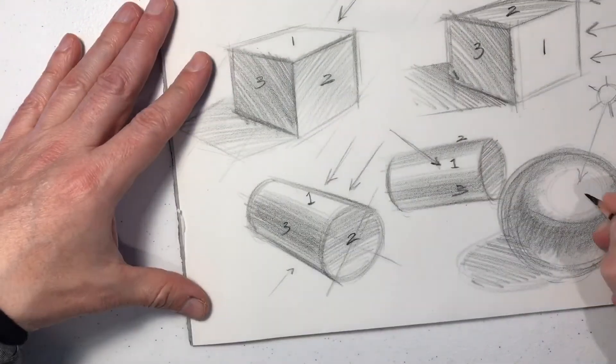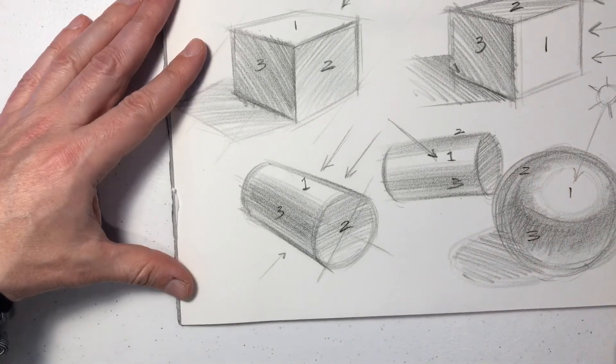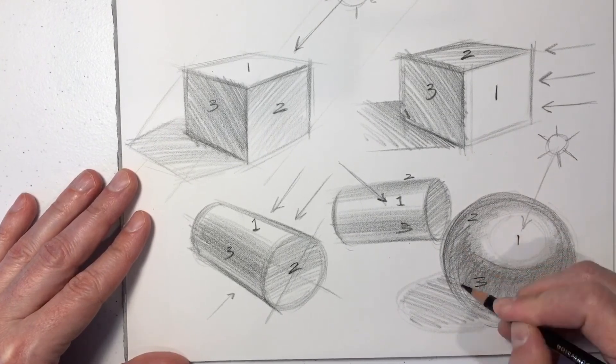We're going to lay down our shadow. And there's your one, your two, and your three. You'll see the very bottom of the sphere is actually reflecting a little bit of the ground tone.